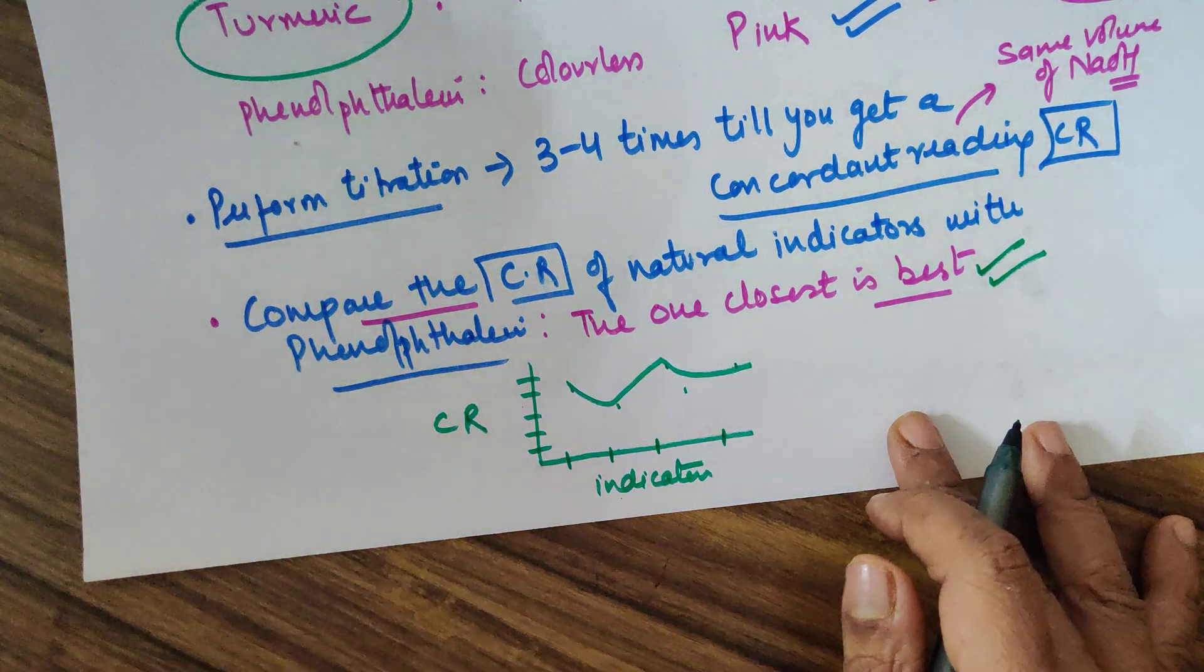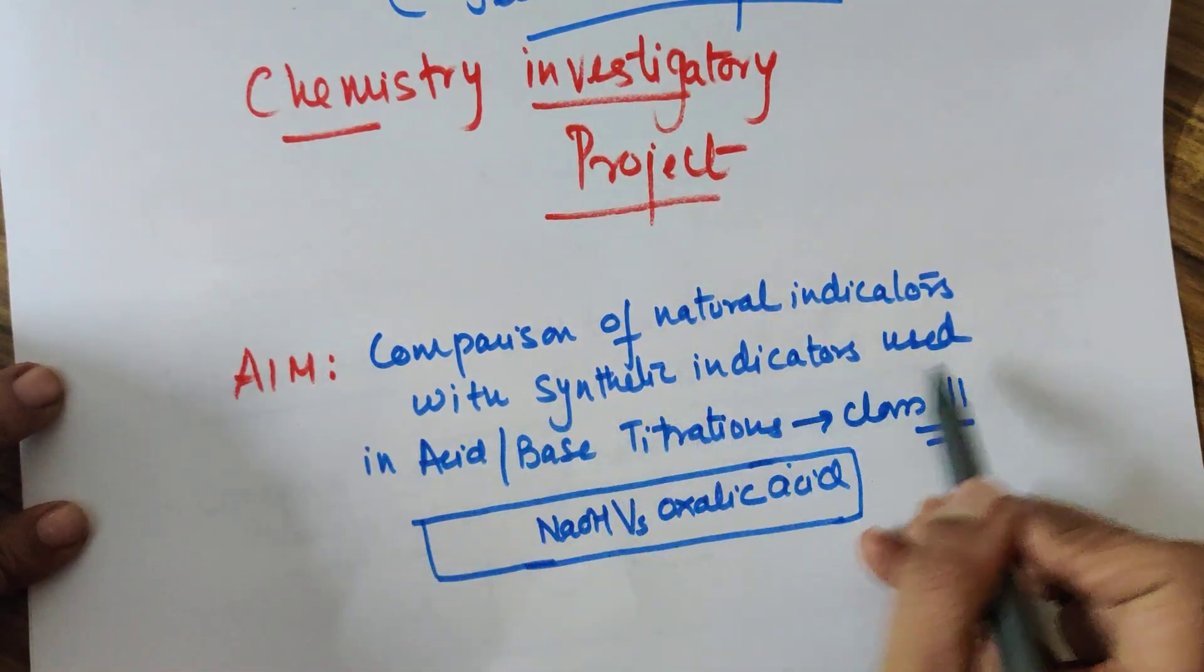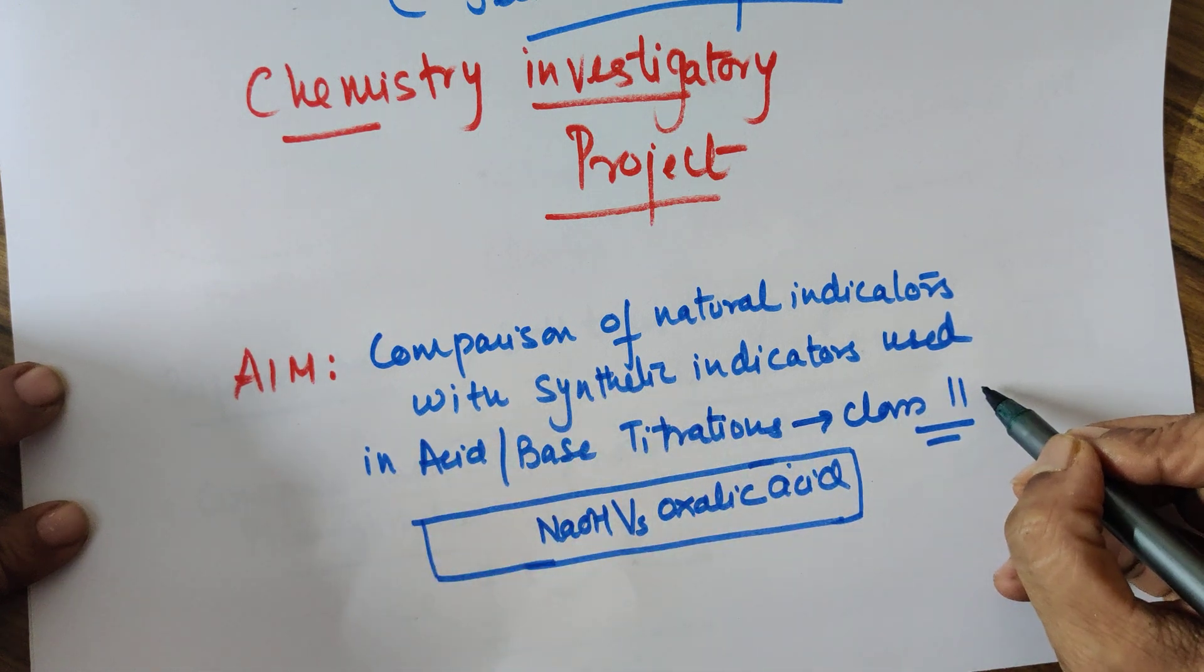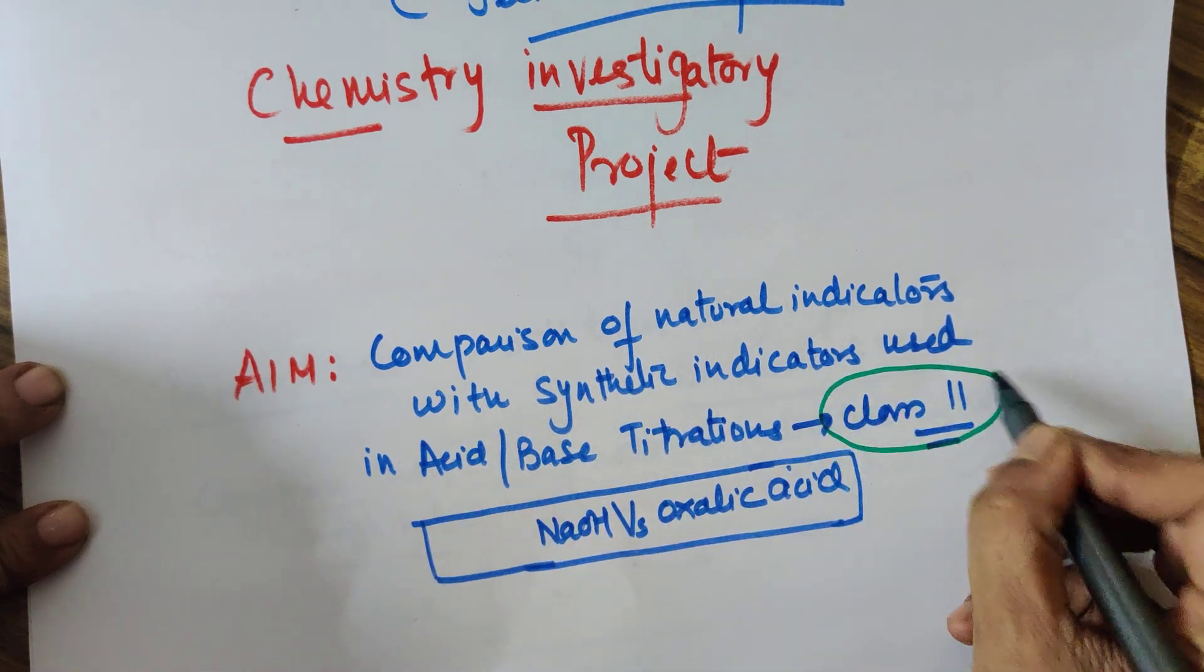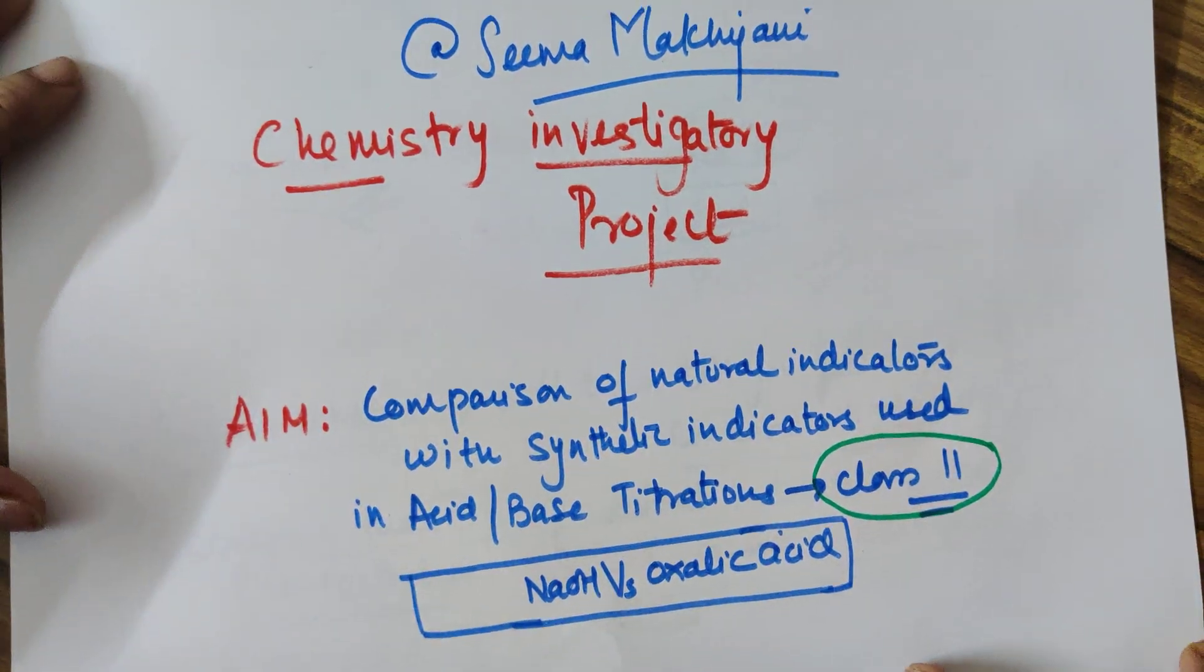So this is how you are supposed to do your investigatory project in chemistry for the topic: comparison of natural indicator with synthetic indicator using an acid base titration. In Class 11th, this was already done. You are just going to use it for Class 12th.